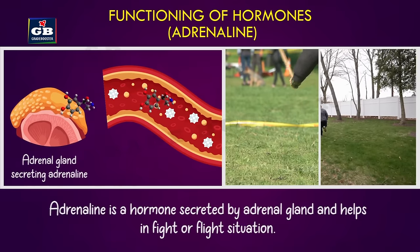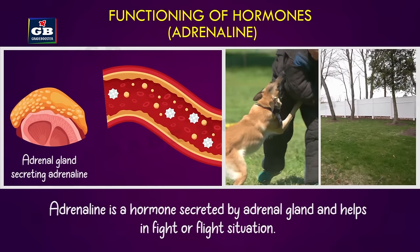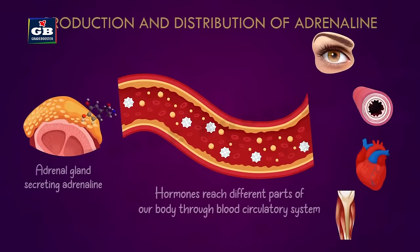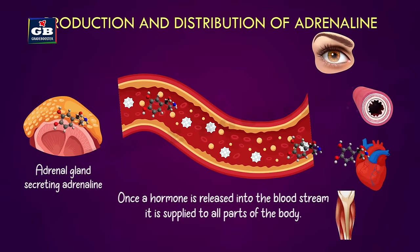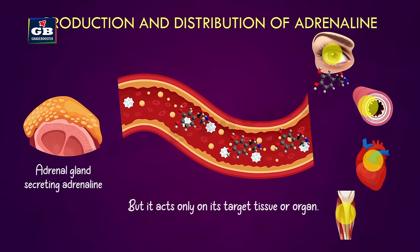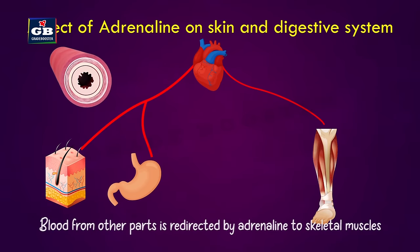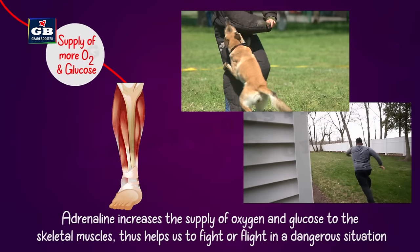For both fighting and fleeing, our muscles need large amounts of glucose and oxygen. The main function of adrenaline is to increase the supply of oxygen and glucose to skeletal muscles. Although adrenaline is supplied to all parts of the body, only specific organs respond. Adrenaline causes the heart to beat faster, supplying more oxygen to muscles. Blood to the digestive system and skin is reduced by contraction of muscles around small arteries, diverting it to skeletal muscles. Adrenaline also increases the breathing rate by increasing the muscular movements of the diaphragm and rib muscles.